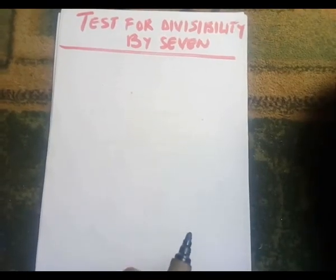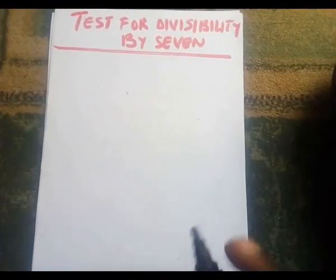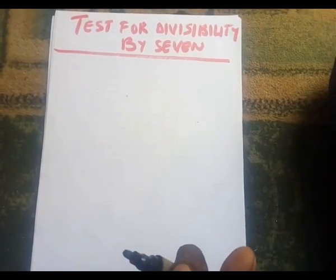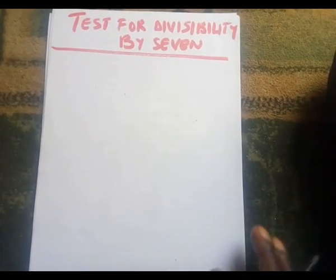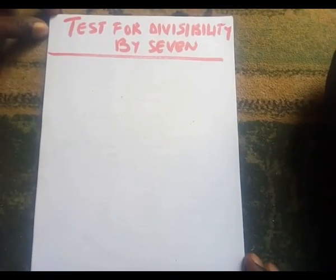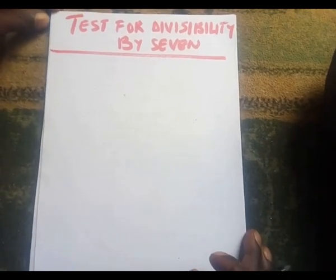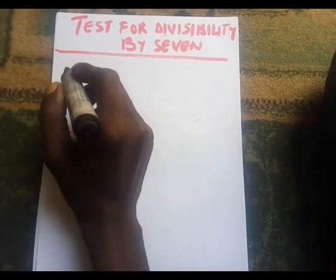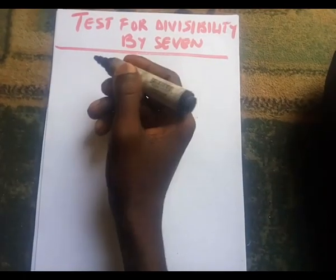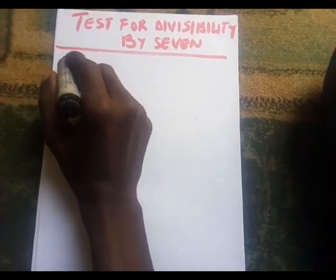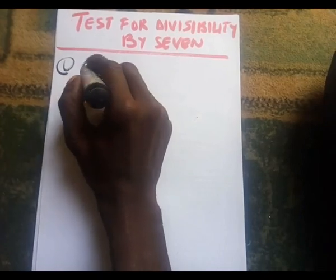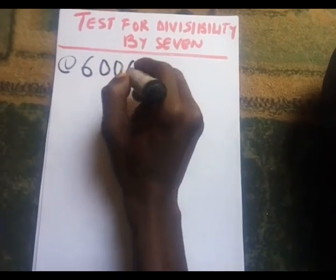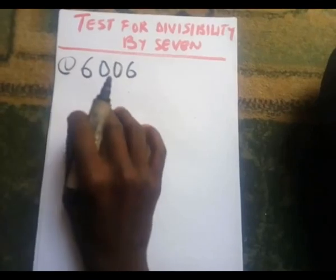Hello everyone, today we are going to look at a test for divisibility by seven, which is a very new invention in the field of mathematics. Let's go straight to the point and start with some examples. For instance, you have a number like six thousand and six.